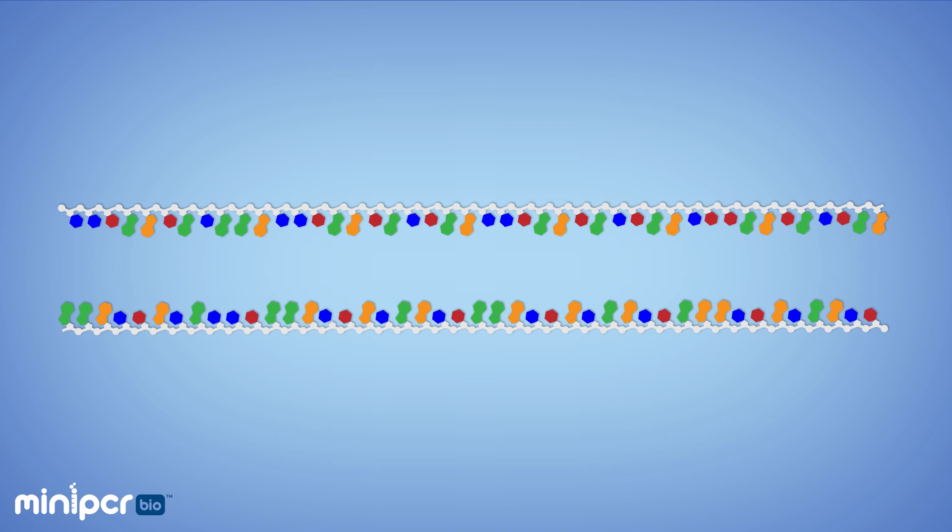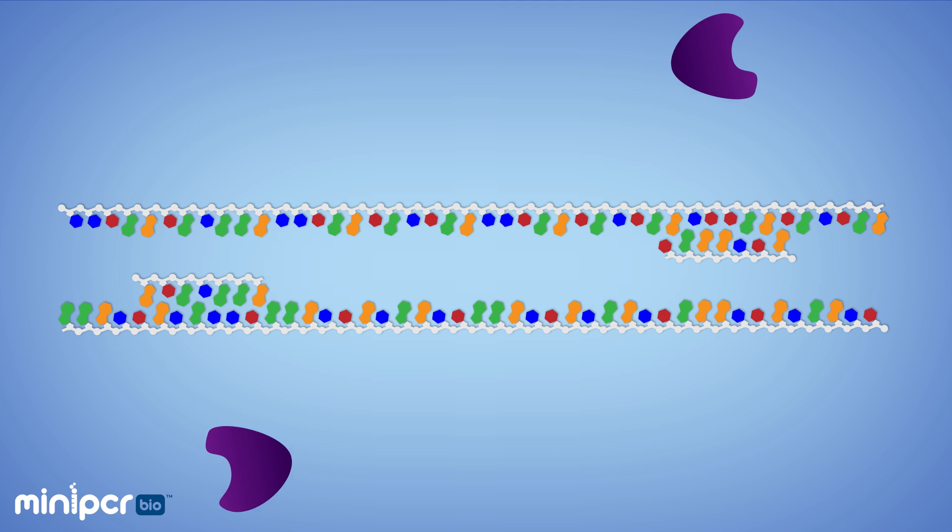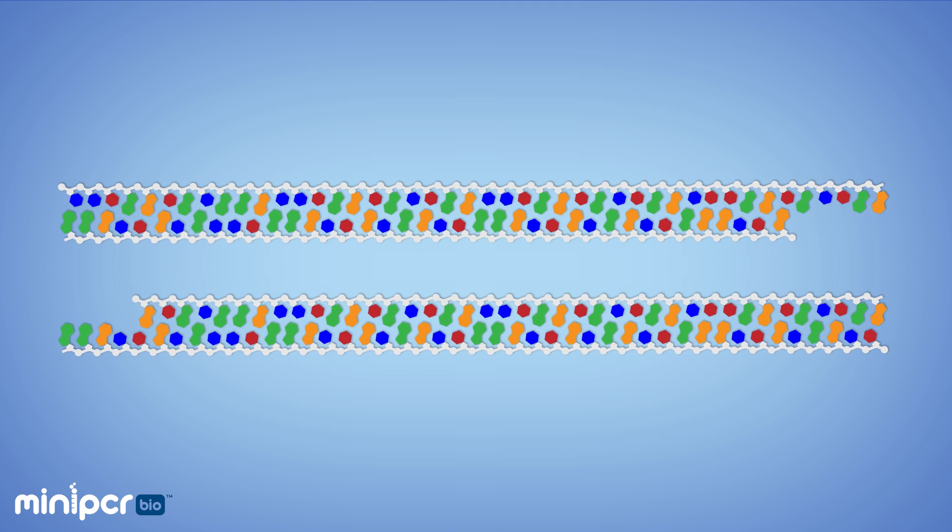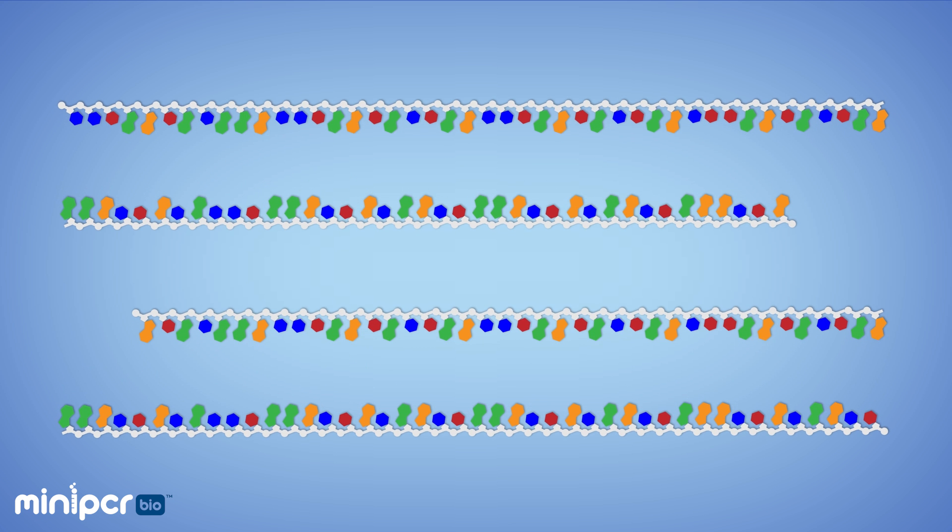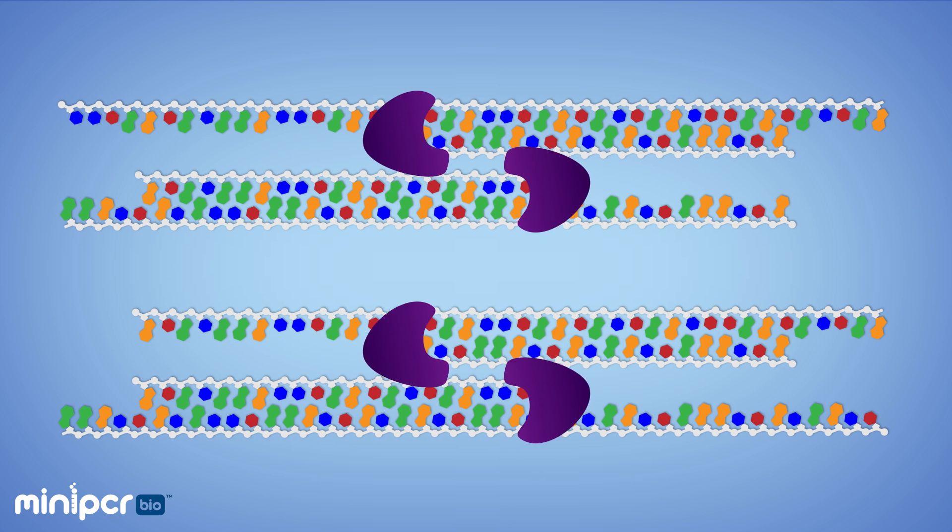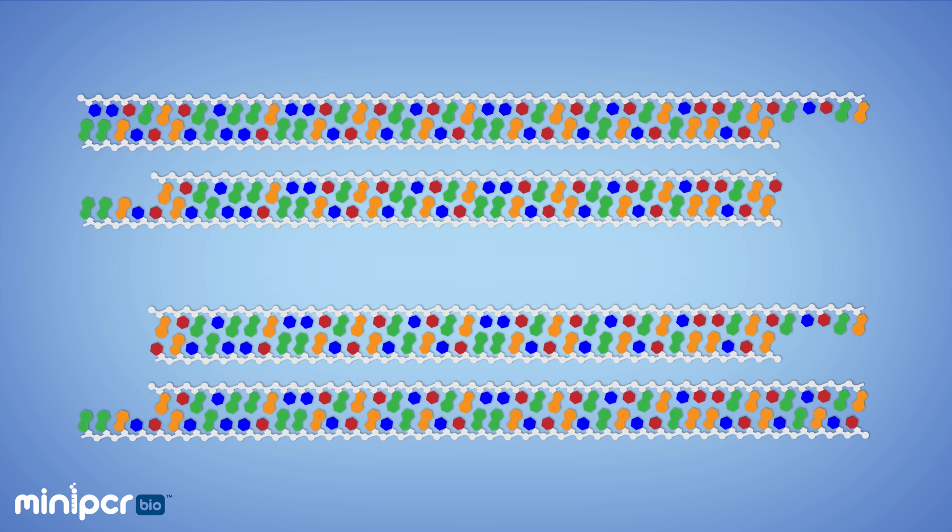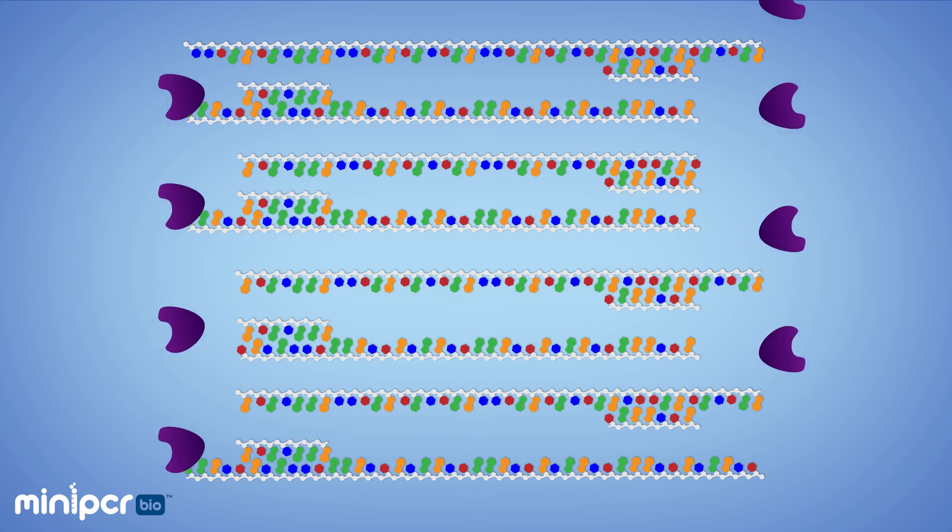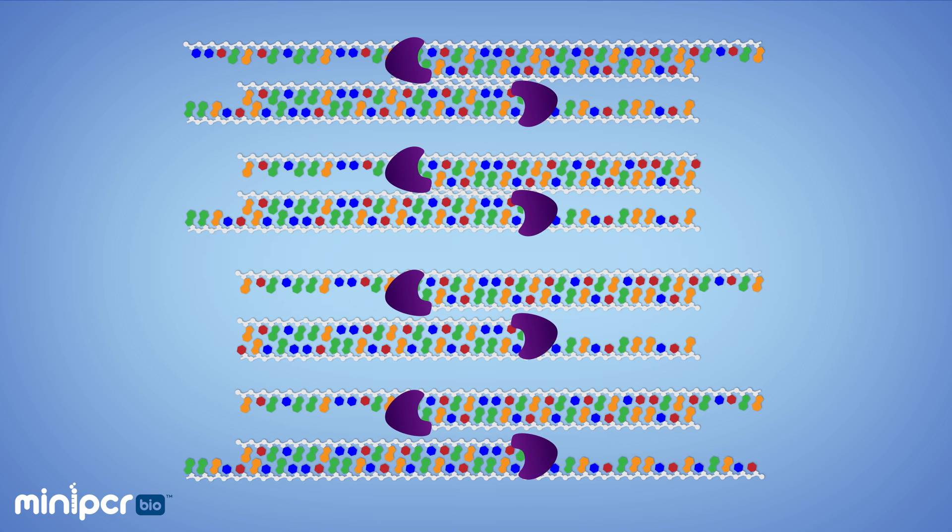After one cycle of these three steps, denature, anneal, and extend, we have turned our original one piece of target DNA into two. But we don't want to stop there. We repeat this cycle over and over again, now turning our two into four, then four into eight, eight into sixteen, and so on. The process creates new identical copies of DNA.